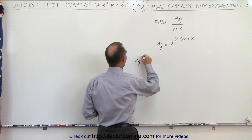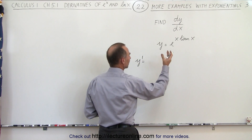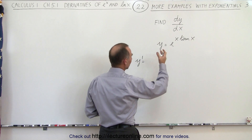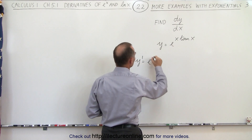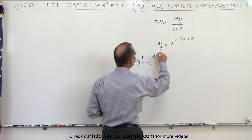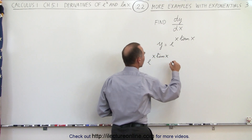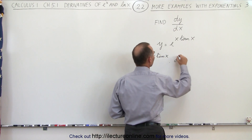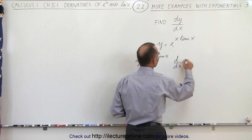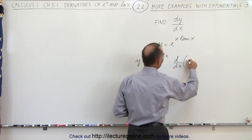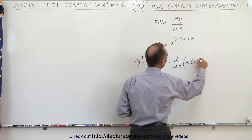y prime — the rule tells us that we rewrite the function: e to the x times the tangent of x. Now we're going to multiply times the derivative, with respect to x, of x times the tangent of x.